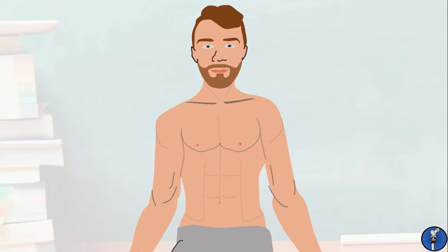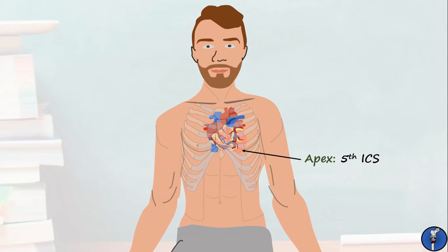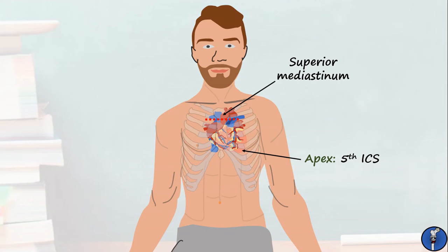Nearly done. The heart sits in the centre of the thorax and is overlied mostly by the sternum. It does, however, have a large protrusion into the left thorax, made up mostly of the left and right ventricles. There is a smaller bulge into the right side, composed mostly of the right atrium. The apex of the heart projects into the left fifth intercostal space. Drawing a horizontal line across the sternal angle is an easy way to find the superior mediastinum. This will be covered in more detail in a later tutorial.